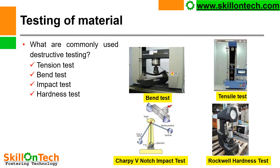Testing of material — what are the commonly used destructive tests? Tension test, bend test, impact test, and hardness test. The tension test is carried out by a Universal Testing Machine, bend test by a bend testing machine, impact test by the Charpy V-notch impact test method, and hardness is done by the Rockwell hardness tester or Brinell hardness tester.